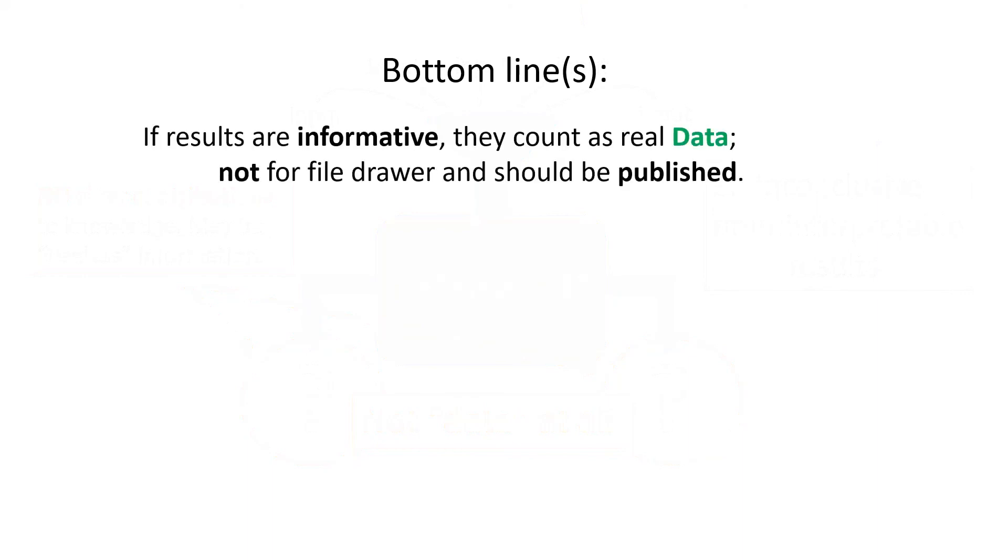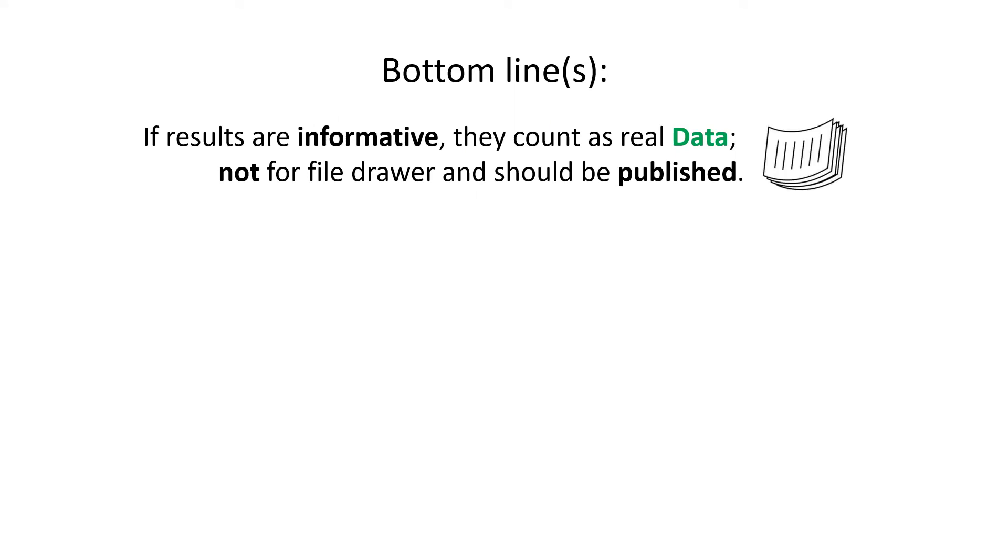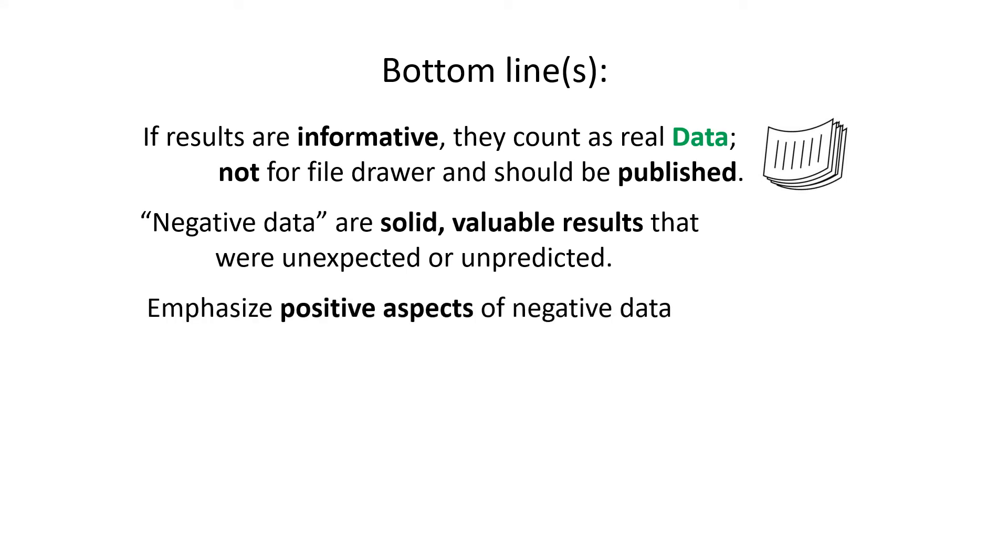And what are the bottom lines here? First, if the results are informative, they count as real data, they're not for the file drawer, and they should be published. Negative data are solid, valuable results that were unexpected or unpredicted. This emphasizes the positive aspects of negative data. They either falsify a hypothesis or represent valid failed replication attempts.